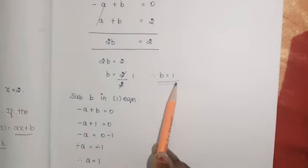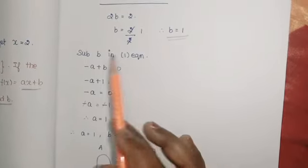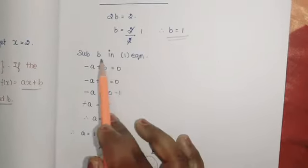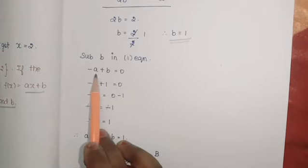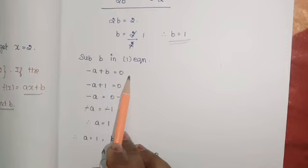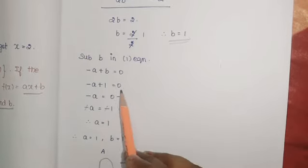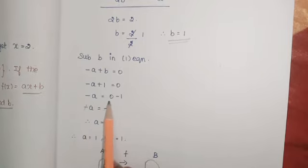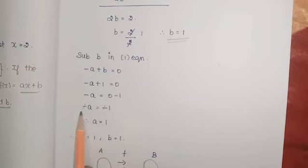The value of b is 1. Substitute b in the first equation: -a + b = 0. -a + 1 = 0. -a = -1. Therefore a = 1.